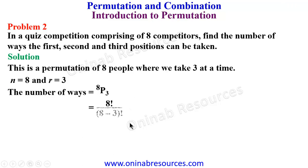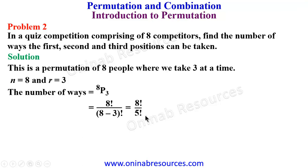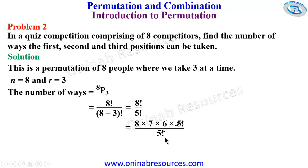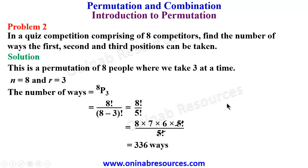The number of ways will be 8P3 = 8! / (8 - 3)! = 8! / 5! = (8 × 7 × 6 × 5!) / 5!. The 5! cancels, leaving 8 × 7 × 6 = 336 ways of taking first, second, and third position among eight competitors in the quiz competition.